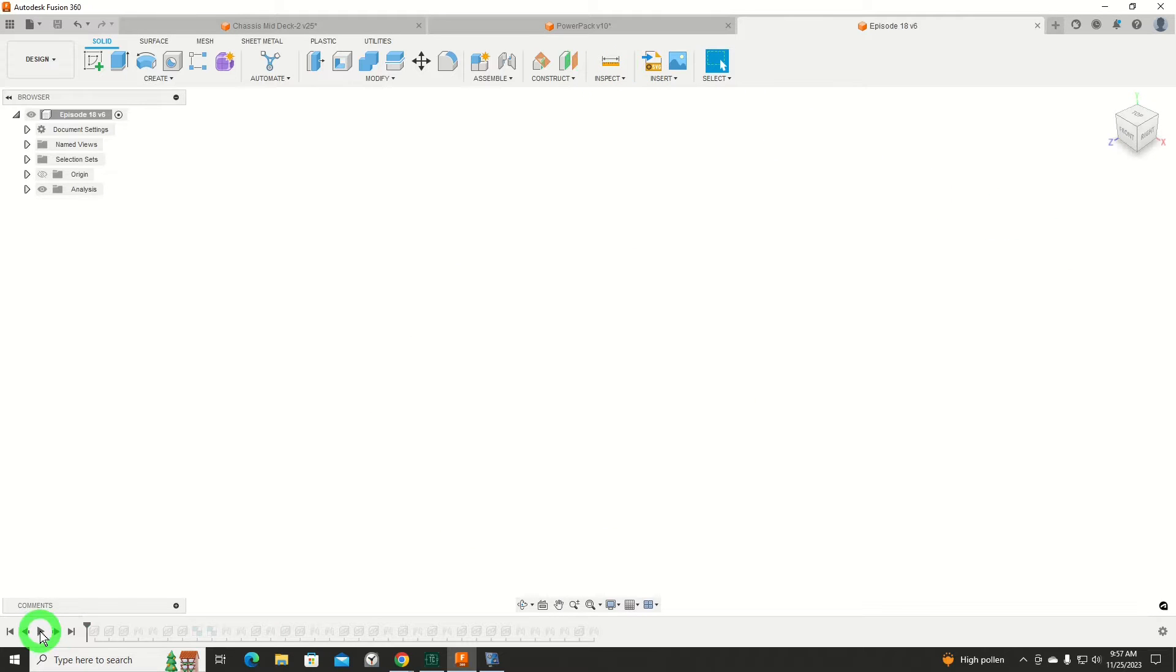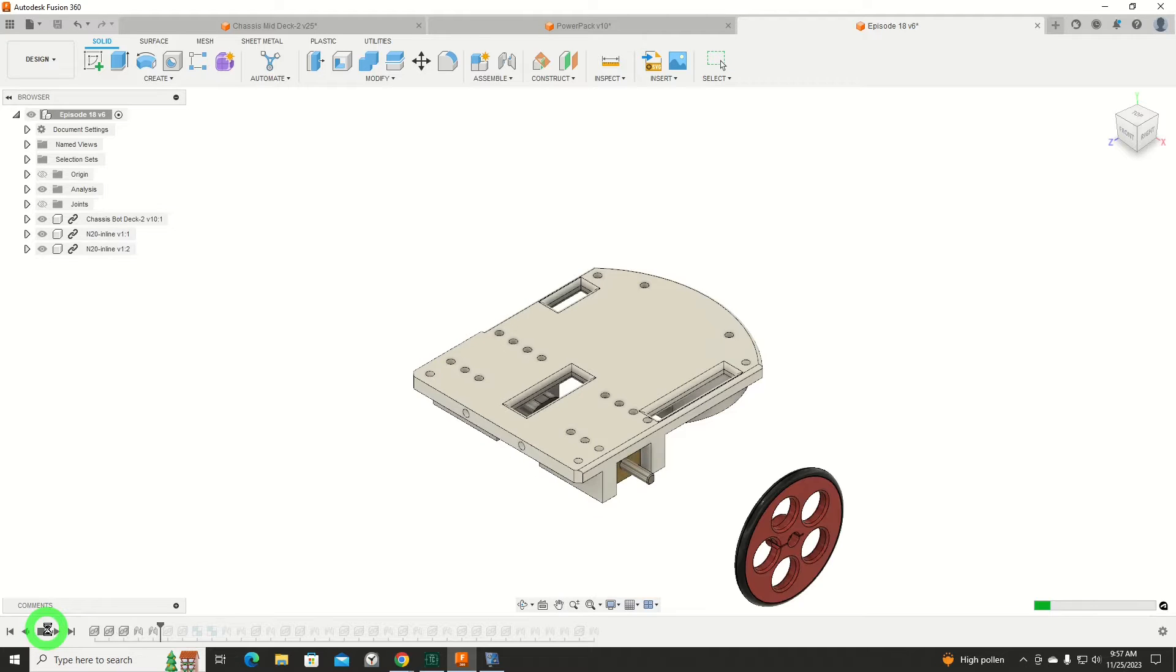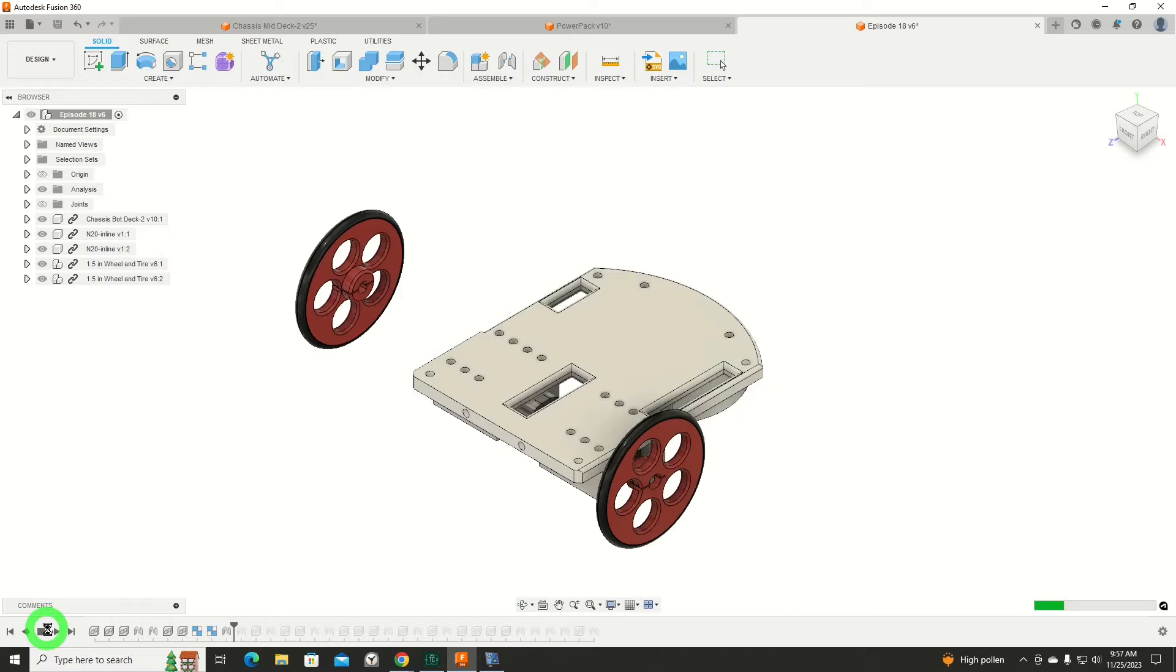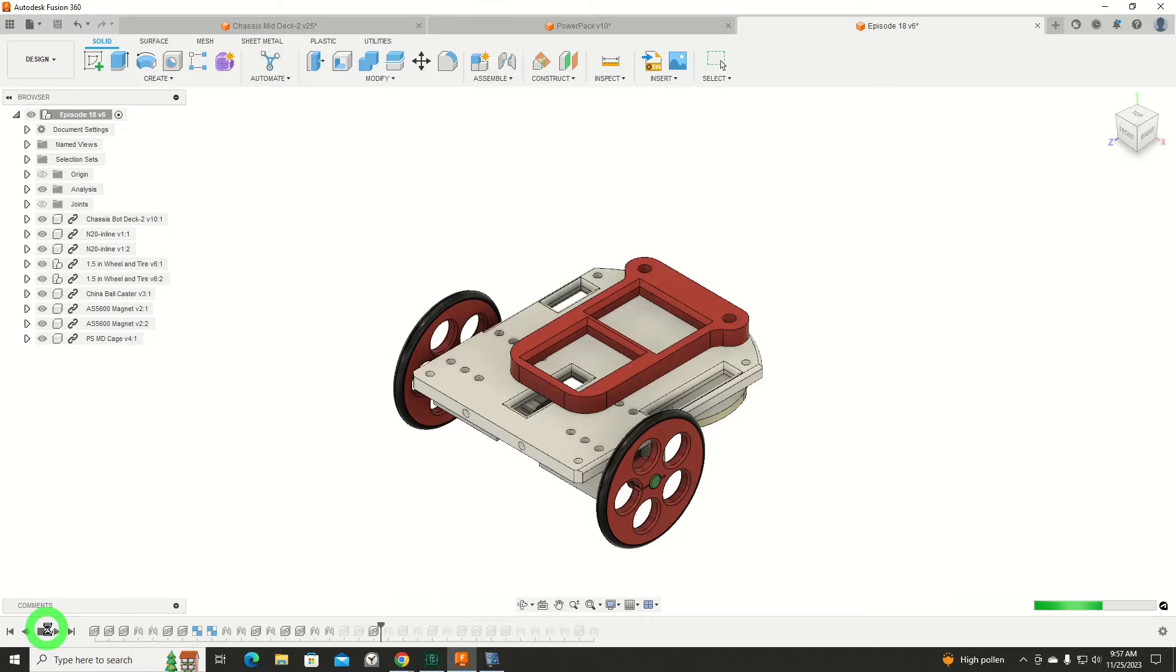Now let's take a look at the whole lower portion of the Zumi thus far. Motors going in, wheels going on, caster wheel going on, magnets for the encoders.